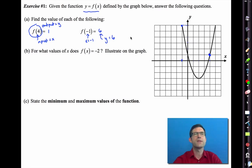Now take a look at letter b. It says, for what values of x does f of x equal negative 2? In other words, in this case, we're going backwards. We know y is equal to negative 2. We want to know the x values. Pause the video right now and see if you can figure this out.